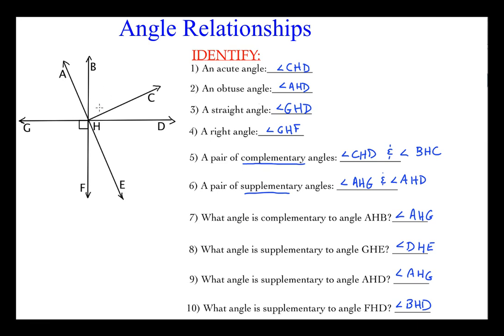Alright, so those are 10 little exercises there to solidify your understanding of these angle relationships. We're going to be using these angle relationships all year long. Acute, obtuse, straight, right are the basic definitions and classifications of angles. And our relationships—complementary and supplementary are not just the only two. We'll talk more about vertical angles and congruent angles and things like that later on. But that's a good start.